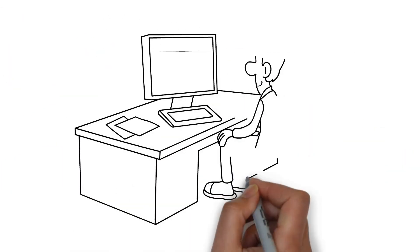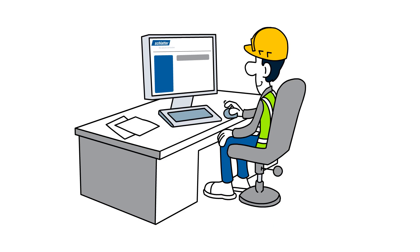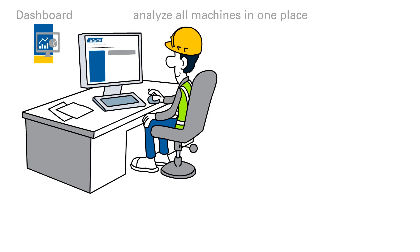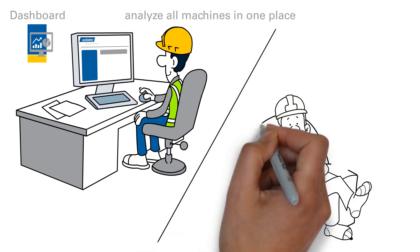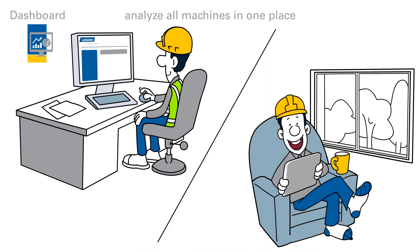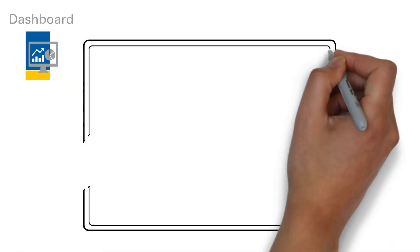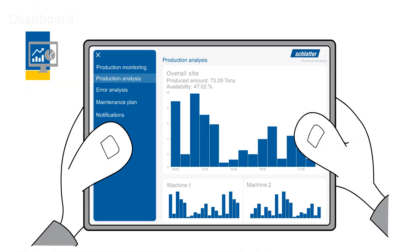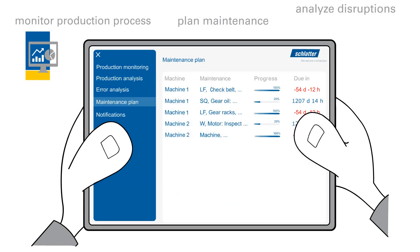The solution to this is Schlatter's new dashboard. It allows Bob to analyze all of his machines in one place, from wherever he is — from the office or on the go. Bob can monitor and evaluate his production process, plan his maintenance and analyze any disruptions.